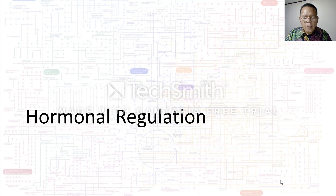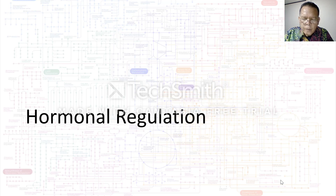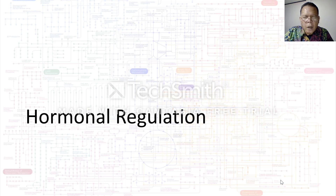However, there are exceptions. There are three highly exergonic steps — steps 1, 3, and 10 — which are also the regulatory steps. These include the enzymes hexokinase, phosphofructokinase, and pyruvate kinase.